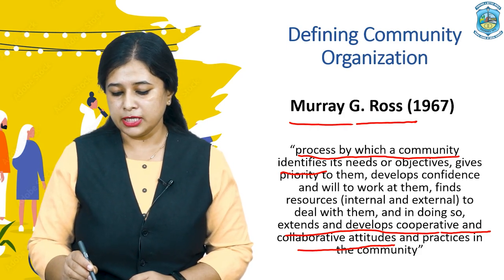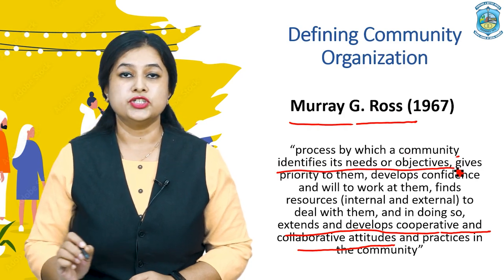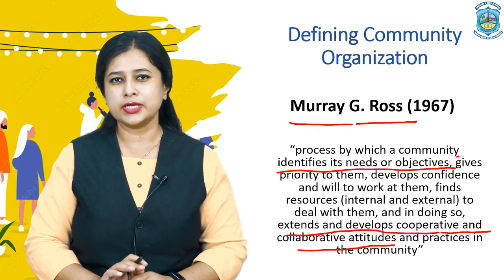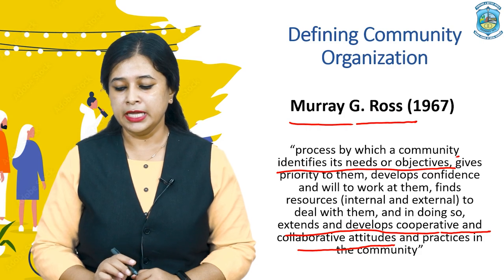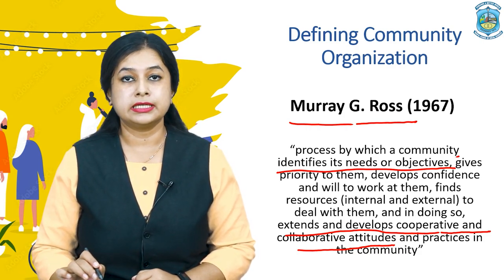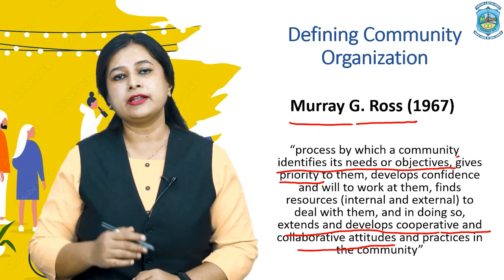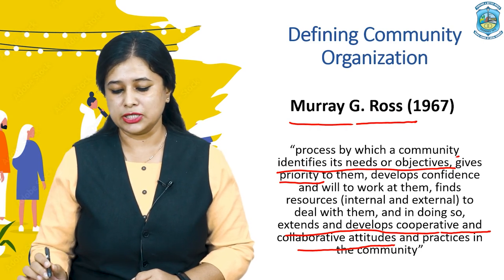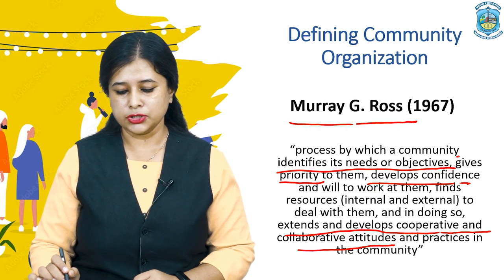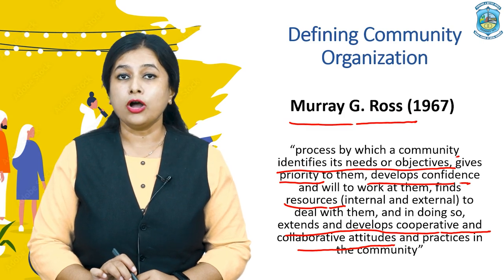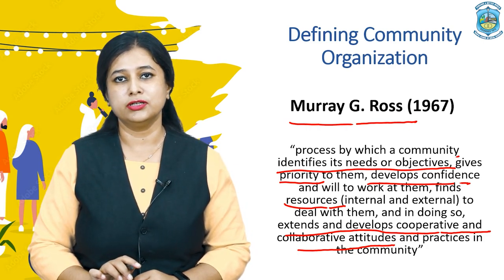When we break this definition down, first we have to look into the concept of identifying needs and objectives. Every community has its own needs and objectives. Murray G. Ross stressed that all interventions done within a community must be based on the needs and objectives of the people living there. The second objective is prioritizing them — when we have a list of needs identified, we prioritize which needs to be worked upon first and the steps to be taken. For this, we need to develop confidence among the people, work at them with the people in the intervention module, and look into resources both internal and external. Cooperation, motivation, and collaboration have been given special emphasis, as these are the elements through which people work in the community for the greater good and development.